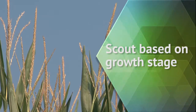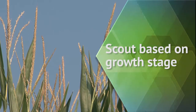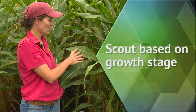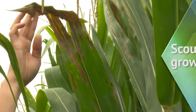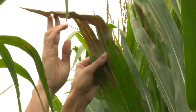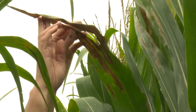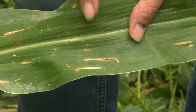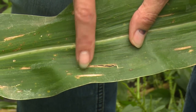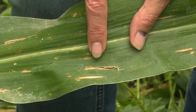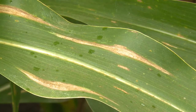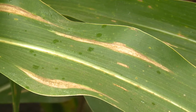At tasseling, you should probably be looking for foliar diseases. The way that we tell foliar diseases apart is by the shape of the spots. A rectangular spot is going to be gray leaf spot; a cigar-shaped spot will be northern corn leaf blight. Those are the symptoms that we see on the plant that help us distinguish what the disease is.